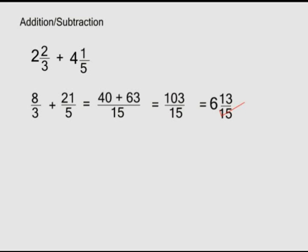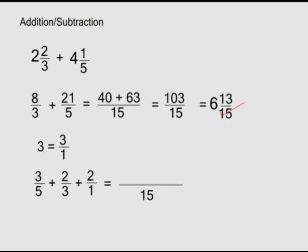Notice that whole numbers can be written as fractions with their denominator being one. For instance, three is the same as three over one. This makes the operations easy. For example, three over five plus two over three plus two: we make two a fraction, two over one, and proceed as usual. LCM of five, three, and one is fifteen. Fifteen divided by five is three; times three is nine. Fifteen divided by three is five; times two is ten. Fifteen divided by one is fifteen; times two is thirty. So we have forty-nine over fifteen, which equals three and four over fifteen.